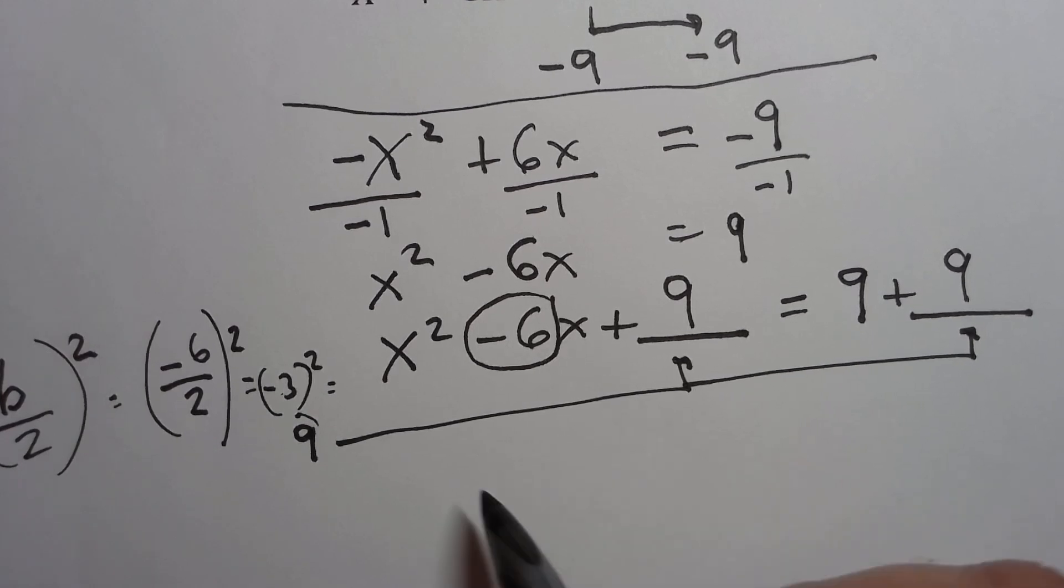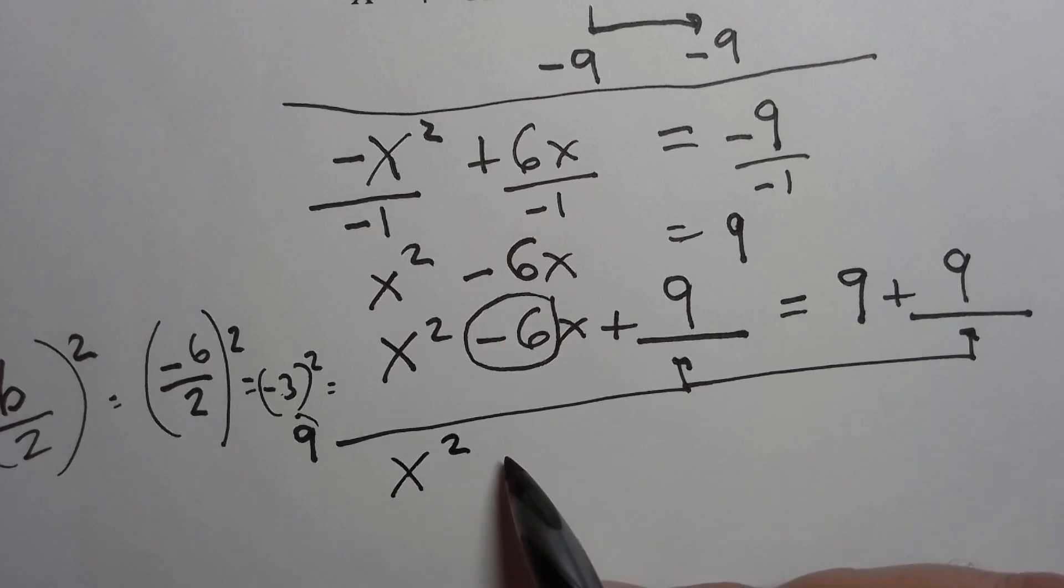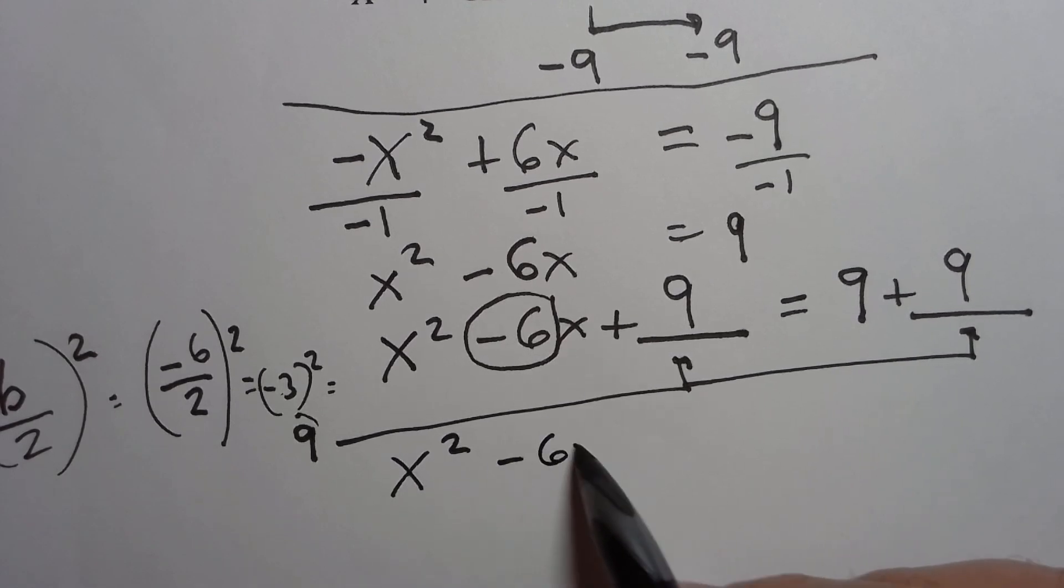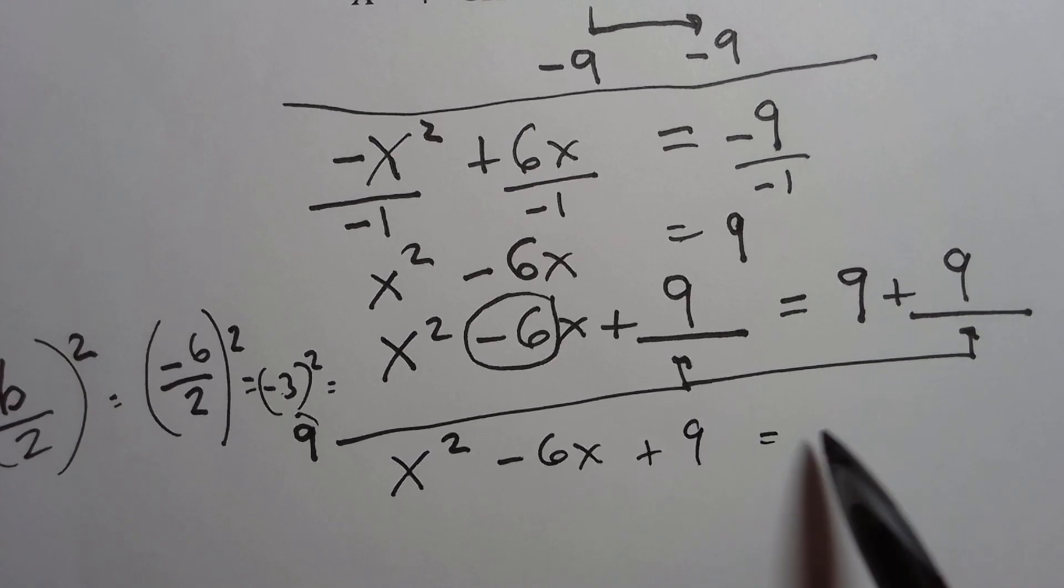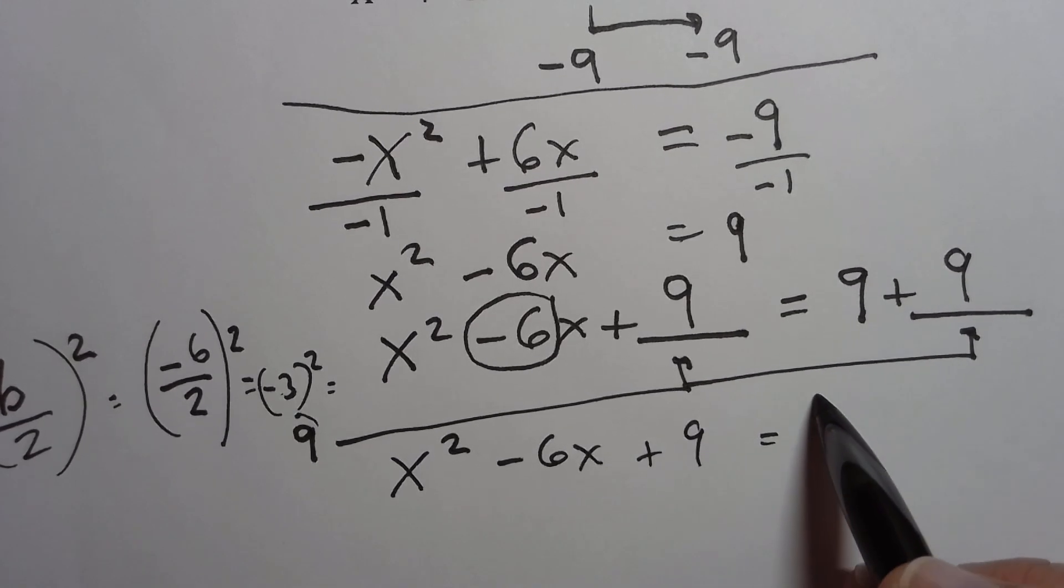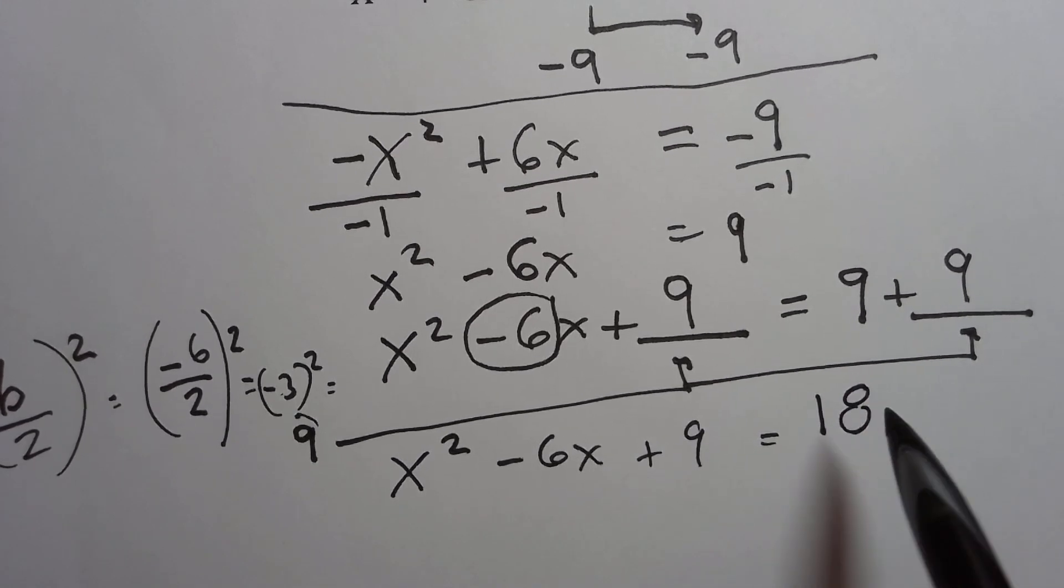So to clean this up, let me just write it without all the mess. x squared minus 6x plus 9 is equal to, and then we add the 9s together. On the right side, we've got 18.